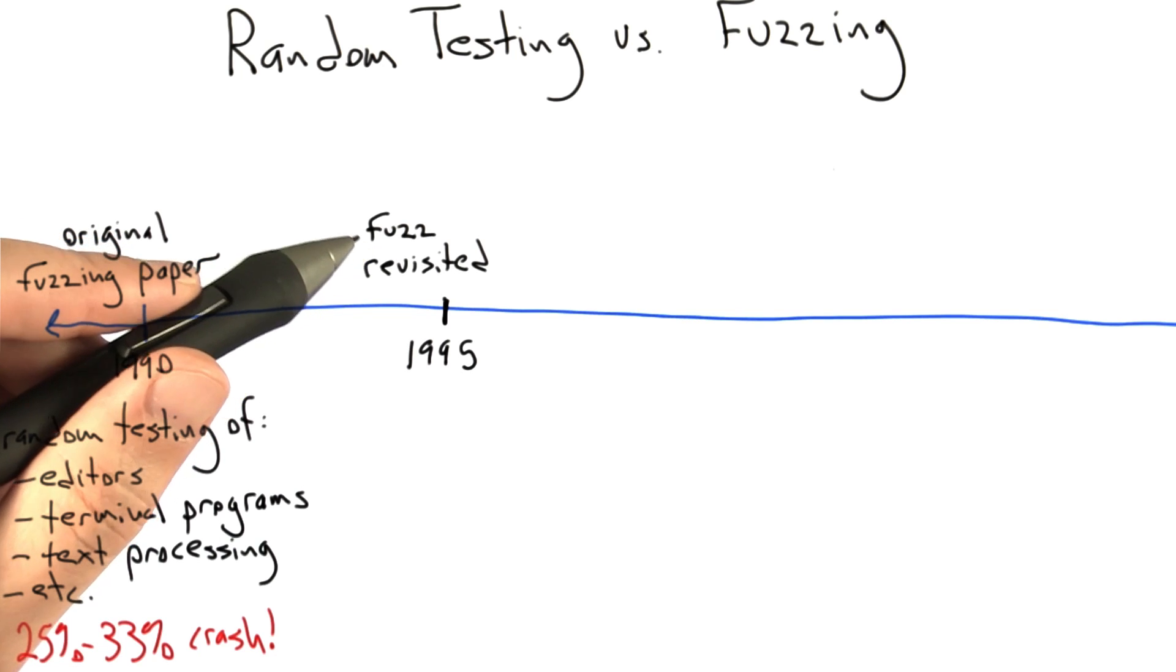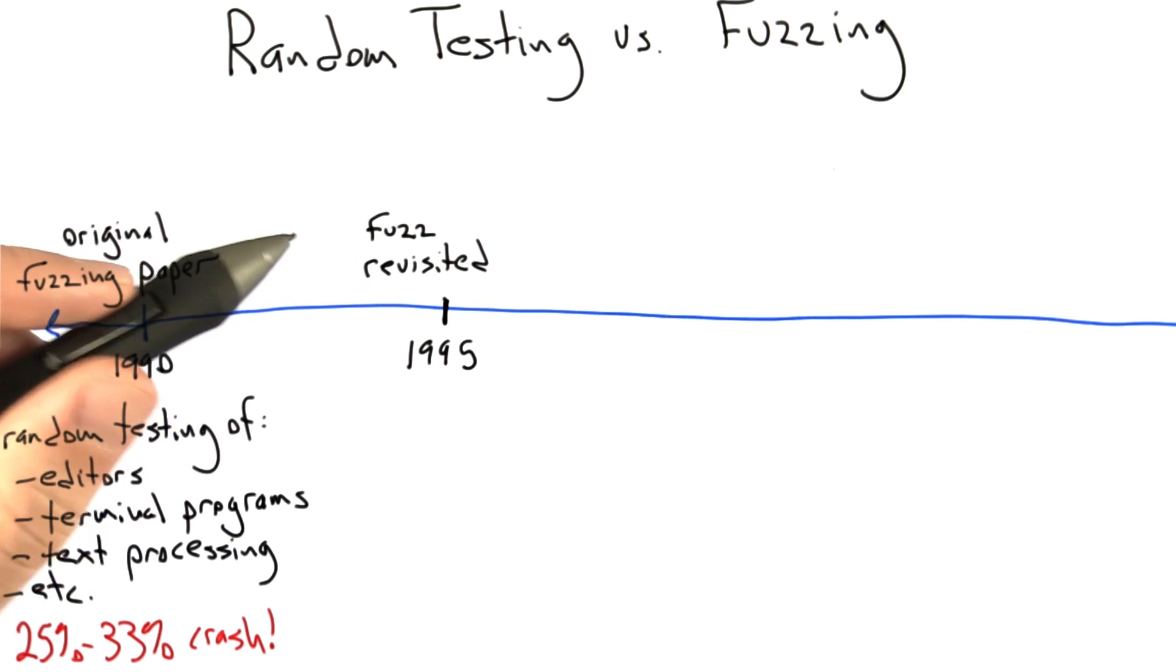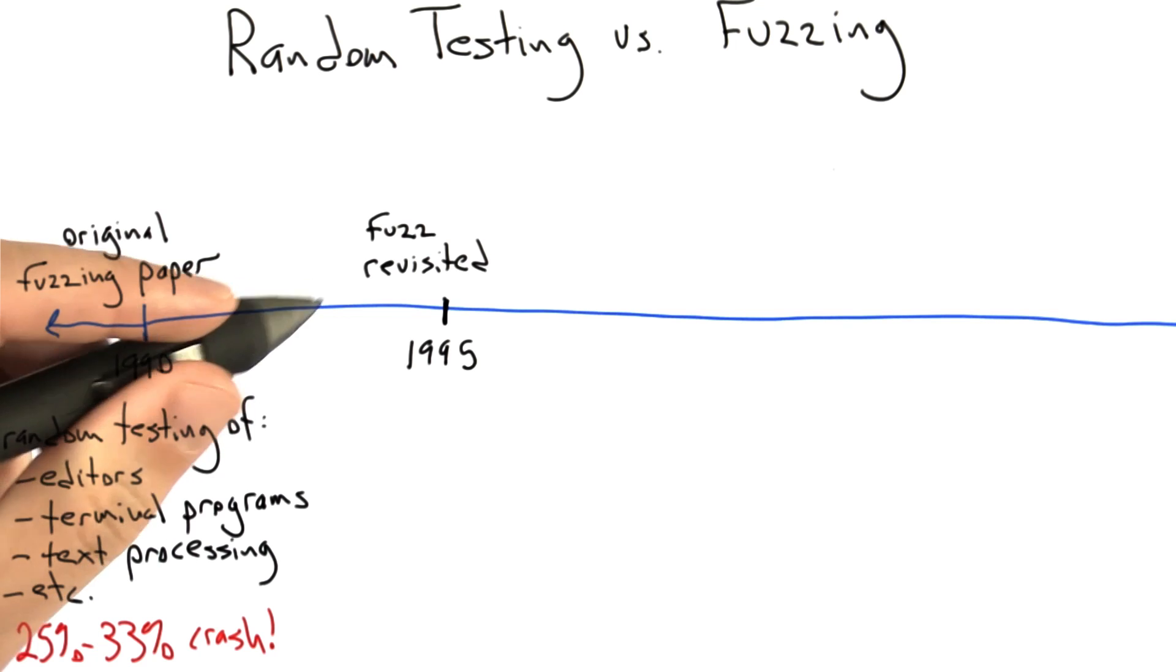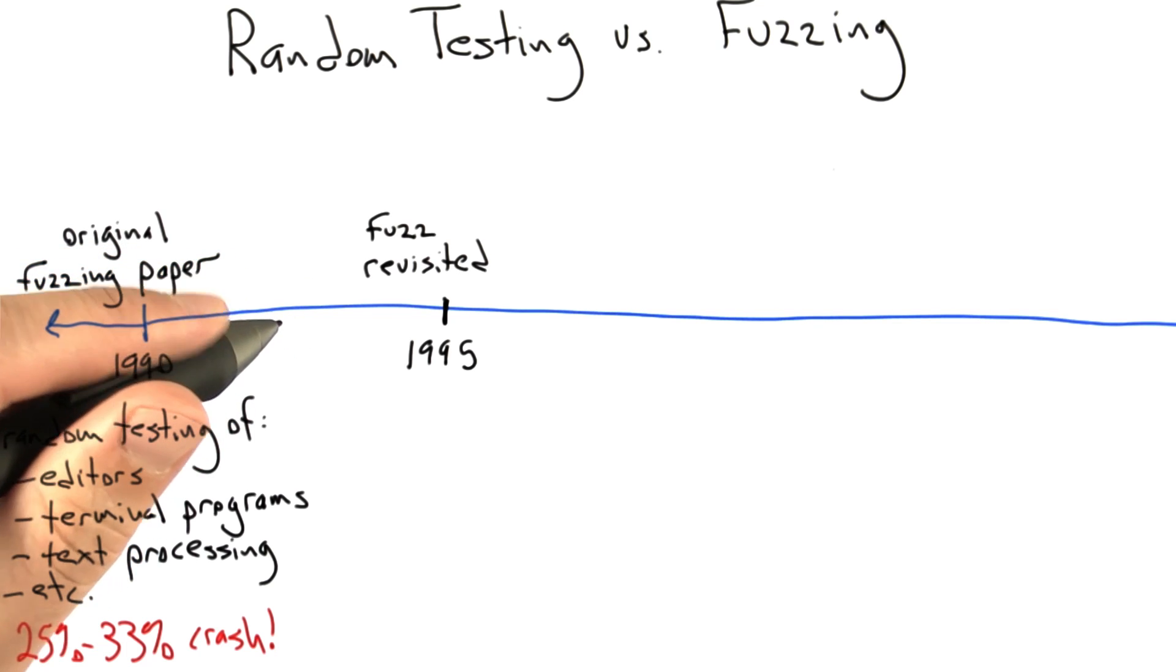A few years later in 1995, the same group repeated the effort and wrote another paper. This time they not only tested the same kind of utilities that they had tested five years earlier, but they extended the work to testing network applications and GUI applications. Basically they got very similar results.